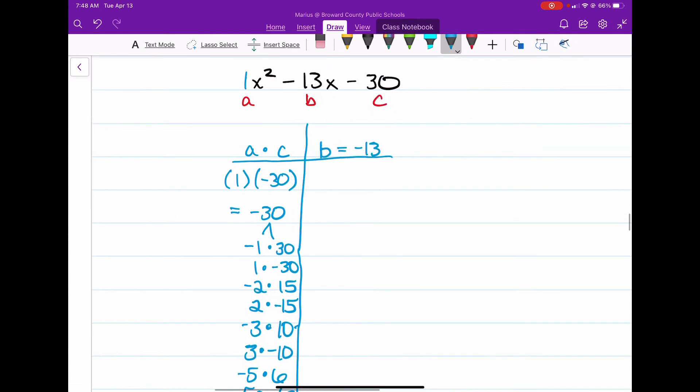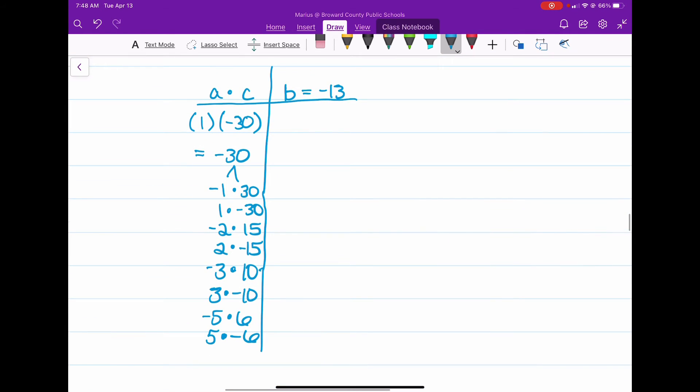So, now that we have our factors of negative 30, remember with a negative number, one of the numbers needs to be negative when you multiply them in order for the product to be negative. So, now we're going to add all of these factor pairs, and we want the one that gives us negative 13.